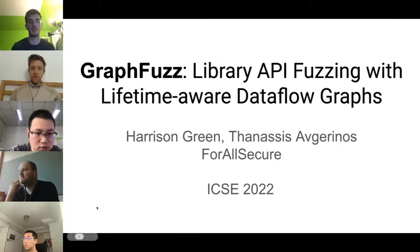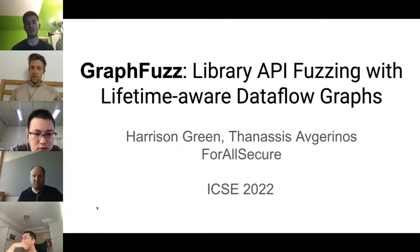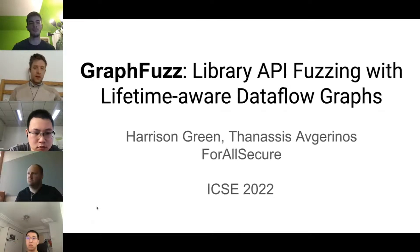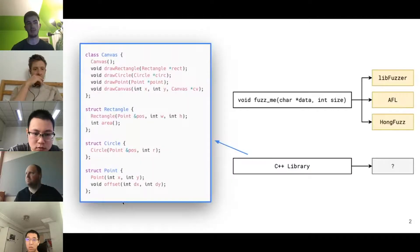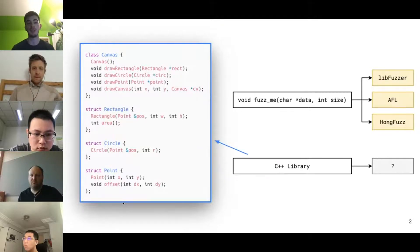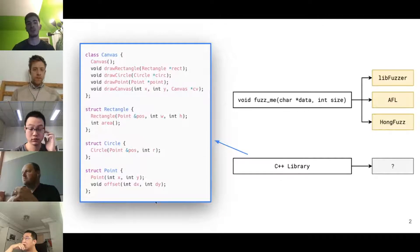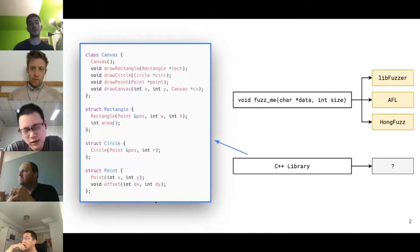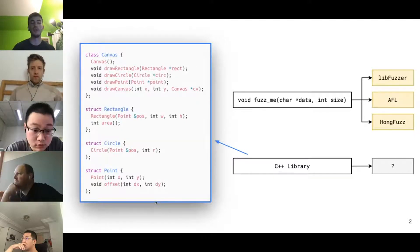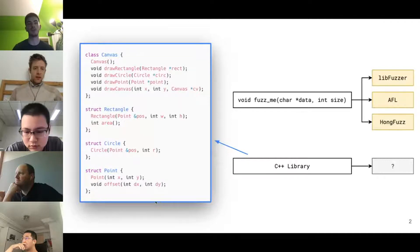Hi everyone, I'm Harrison. This is GraphFuzz: Library API Fuzzing with Lifetime-Aware Data Flow Graphs — work done at ForAllSecure with Anasis. The problem we're solving is how to automatically test APIs, focusing on C++ APIs, though many ideas generalize. Fuzzing is a well-established automated testing technique where you create a wrapper function that takes a big chunk of data and does something with it — for example, calling a parse_image function — and the fuzzer invokes this function millions of times with different data.